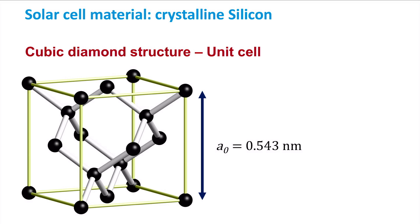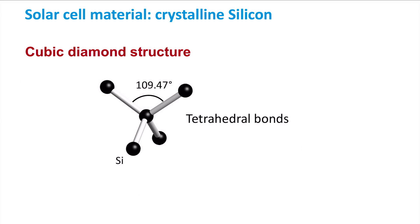The lattice spacing of crystalline silicon is 0.543 nm. When focusing on one silicon atom we see that the covalent bonds of this atom with 4 other silicon atoms form a tetrahedral structure with a bond angle of 109.47 degrees.